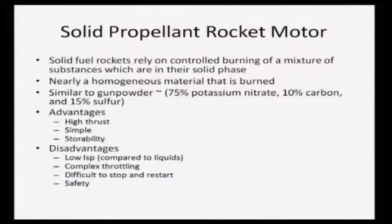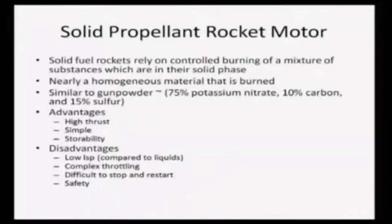However, as with any device, there are disadvantages as well. The main disadvantage is that the specific impulse compared to liquid rockets is fairly low. Solid propellant rockets have a specific impulse in the range of 200 to 300 seconds, whereas a liquid propellant cryogenic rocket can be as high as 450 seconds — almost double the specific impulse of a solid propellant rocket.